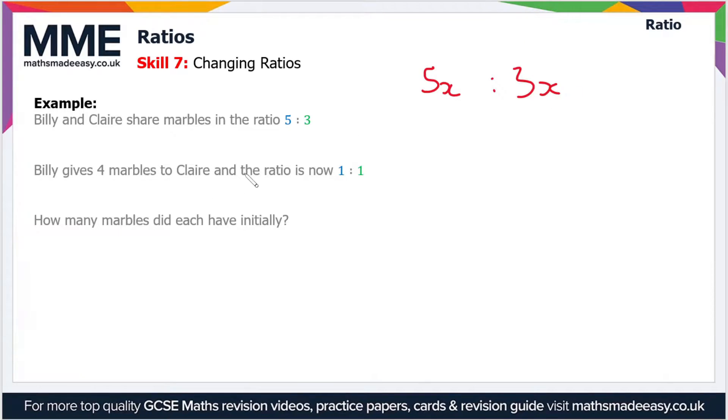When Billy gives 4 marbles to Claire, Billy now has 5x - 4 and Claire now has 3x + 4.